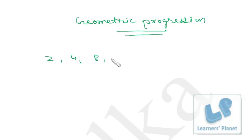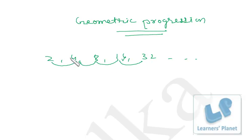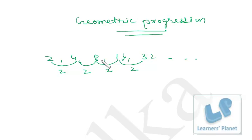Take the example 2, 4, 8, 16, 32 and so on. You can see: 4 divided by 2 is 2, 8 divided by 4 is 2, 16 divided by 8 is 2, 32 divided by 16 is 2. The common ratio is the same — the second term divided by the first term gives 2 everywhere. So in this sequence the common ratio is same. In arithmetic progression, common difference is same; in geometric progression, common ratio is same.